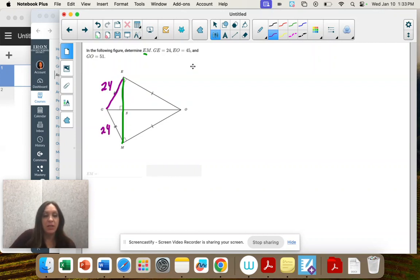And then e to o is 45 and same. This is 45. And then go, so all the way across is 51.